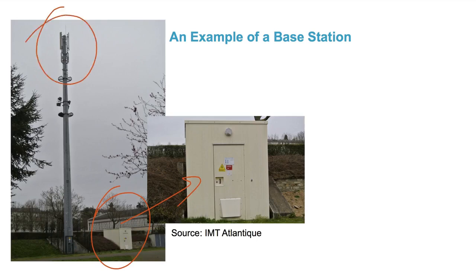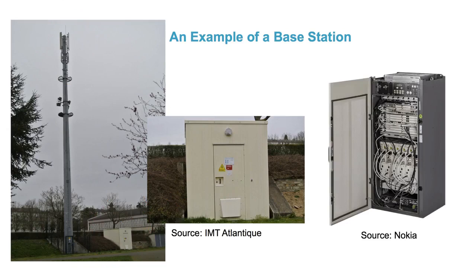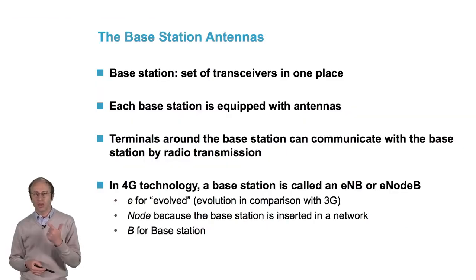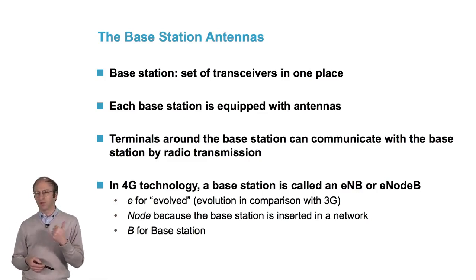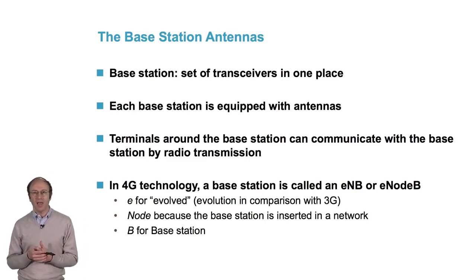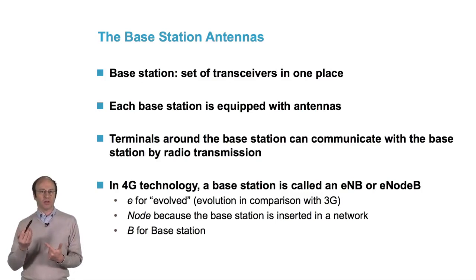An antenna is a radiating device that transforms high-frequency alternating current into electromagnetic waves, or the other way around. In the technical cabinet, if we open the door, we see a set of transceivers that enable radio transmission between the terminal — which is also a transceiver — and the network. So we have two things that are very different: the base station, a set of transceivers located in a place to cover the area around it, and the antenna, which is, so to speak, the tip of the iceberg — the radiating device.